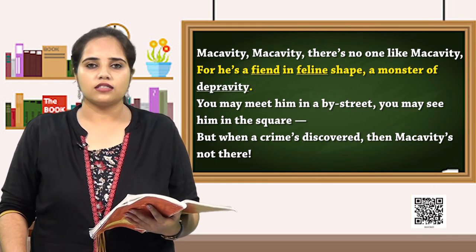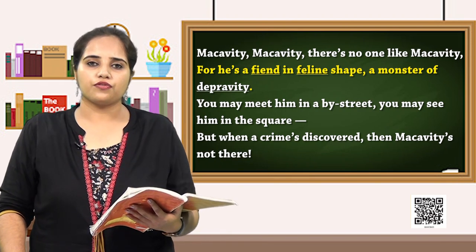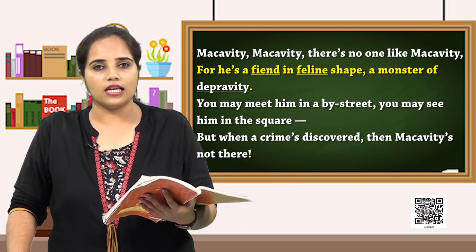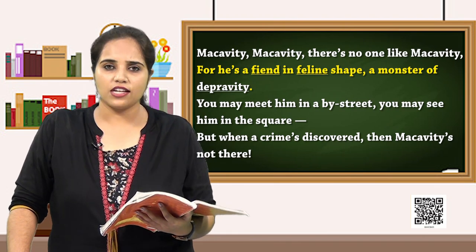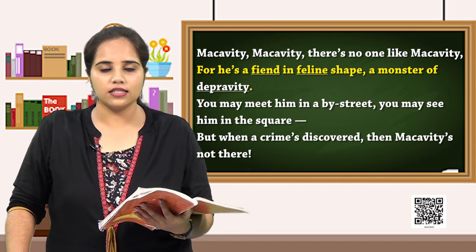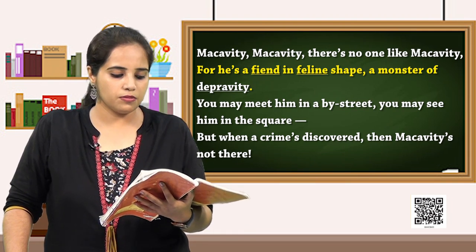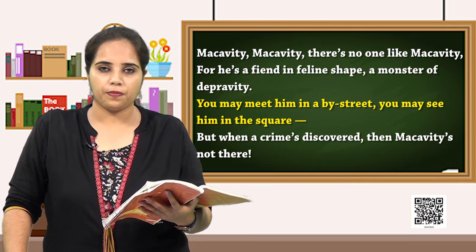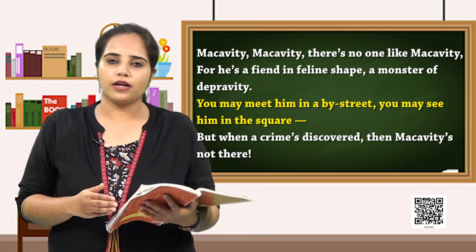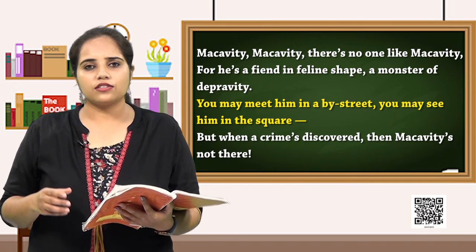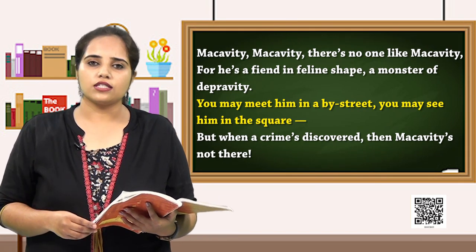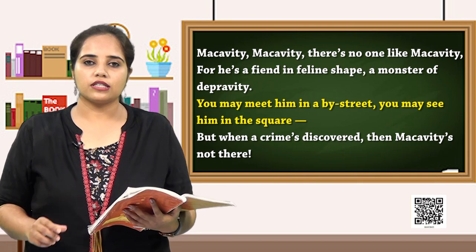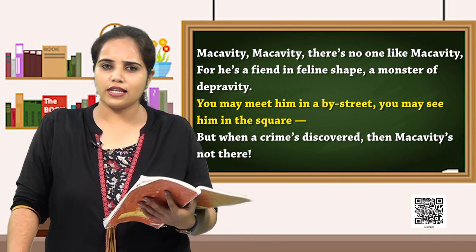So Macavity is considered devilish because of the things that he does and absconds — because going against a law, whether set by society or by nature, is completely unbearable. When you go to the next line of the same stanza: 'You may meet him in a by-street, you may see him in the square.' This particular line is completely different when compared to the rest of the lines in the poem, because in the rest of the lines the poet has not given any reference involving the reader directly. But here the poet is slightly warning us.